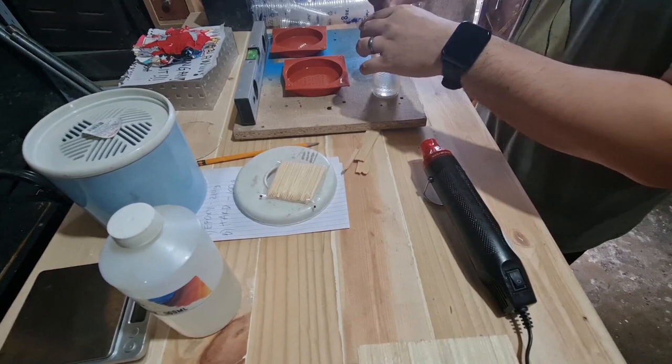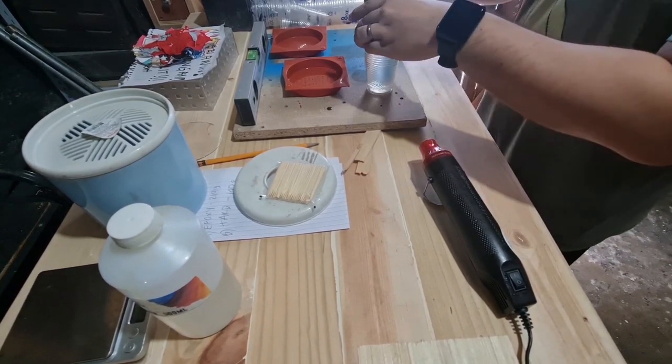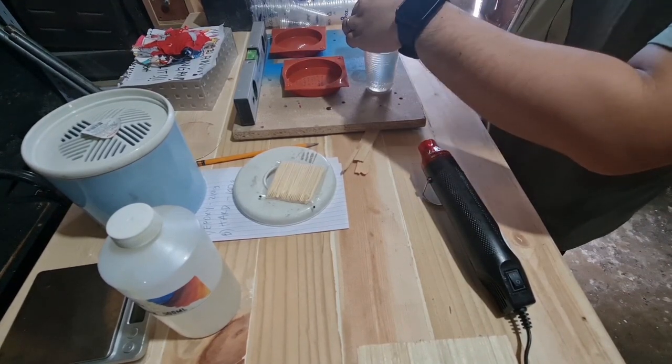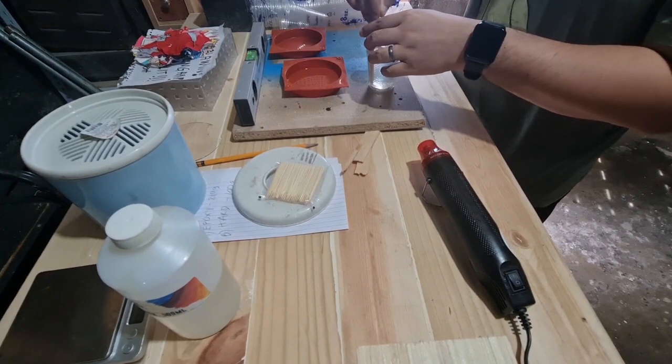Be careful when mixing large volume of resin, as it cures faster. Using a heat gun while mixing also helps with the air bubbles.